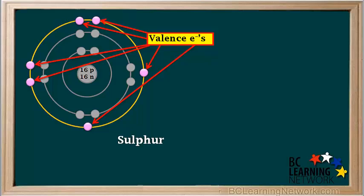Here's another example: a neutral atom of sulfur, element number 16, which has a total of 16 electrons. It has six valence electrons — the six electrons shown in pink in shell number three, the valence shell of sulfur.